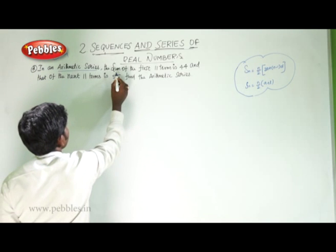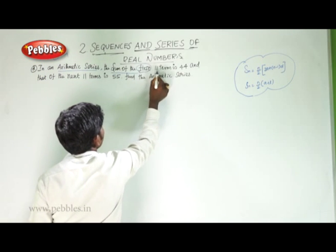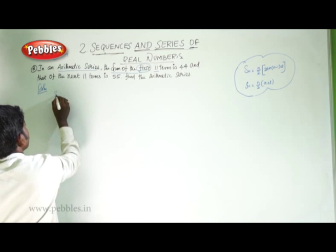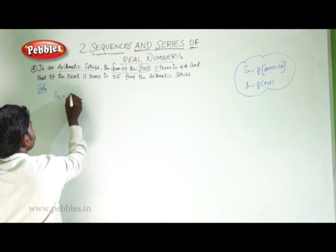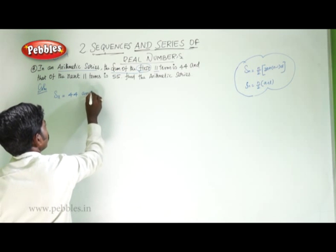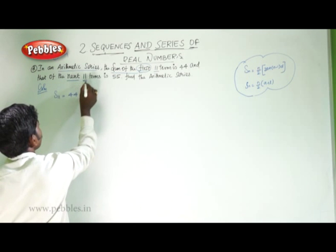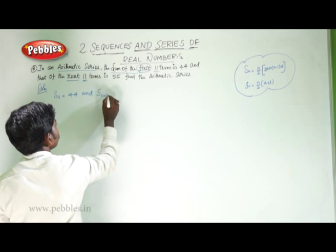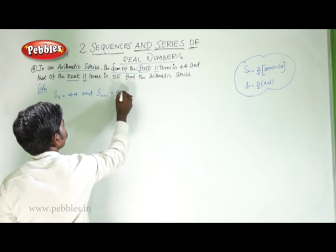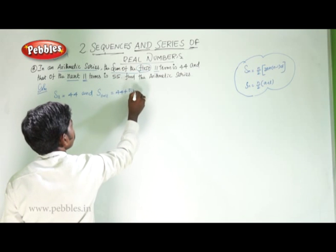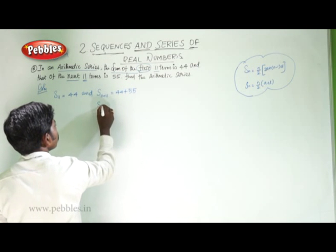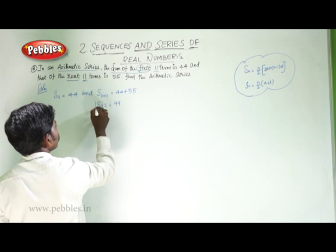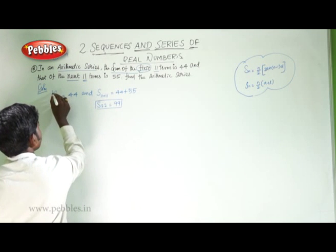In an arithmetic series, the sum of the first 11 terms is 44. The next 11 terms give S22 equal to 44 plus 55, so S22 is equal to 99, by the given information.